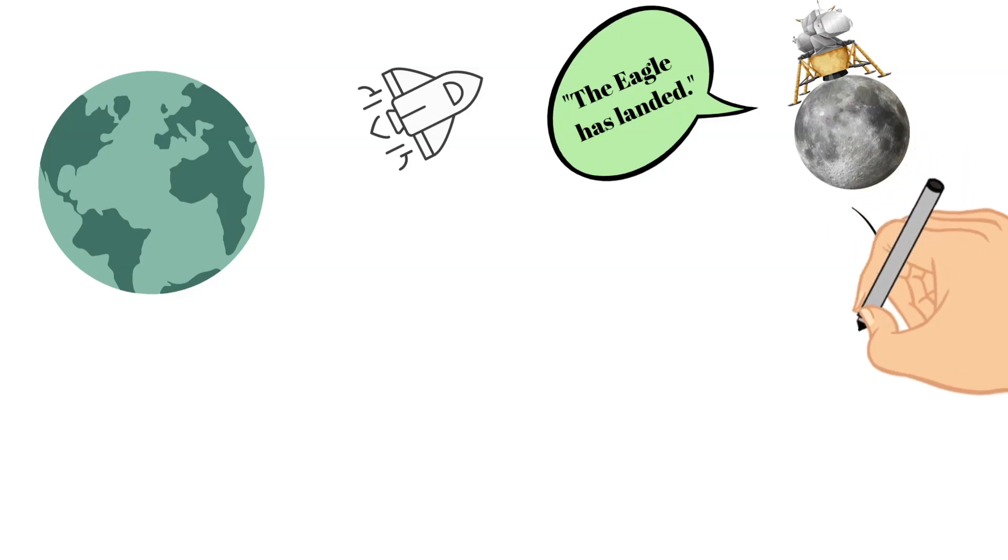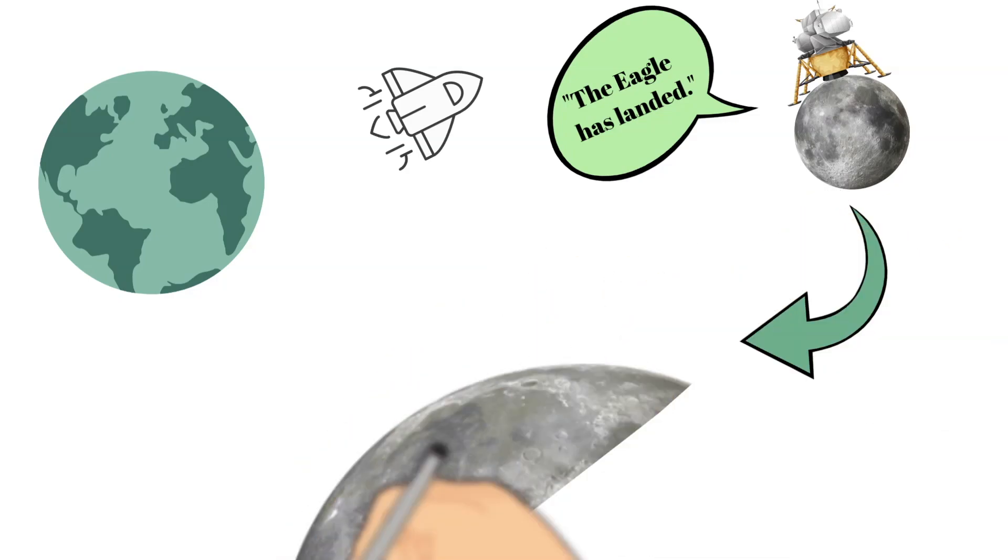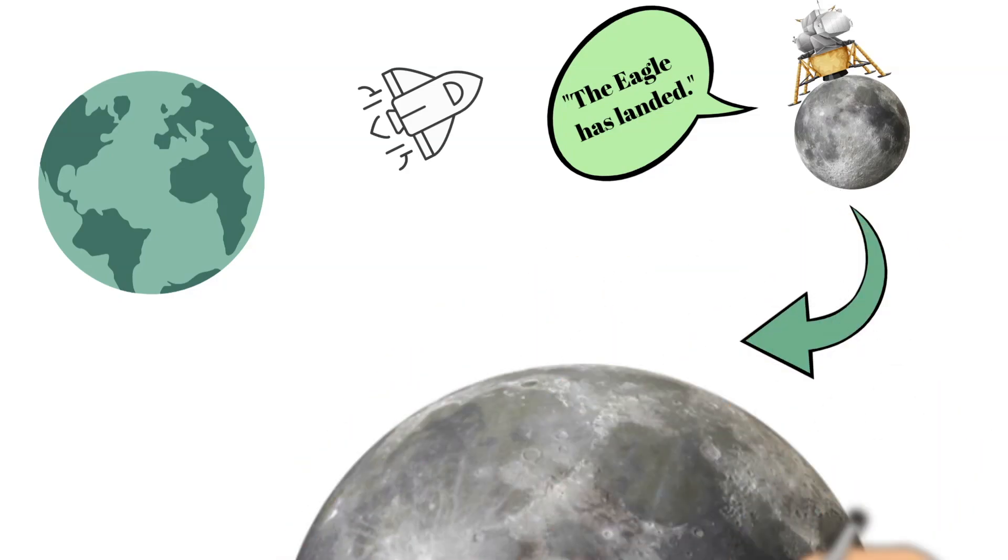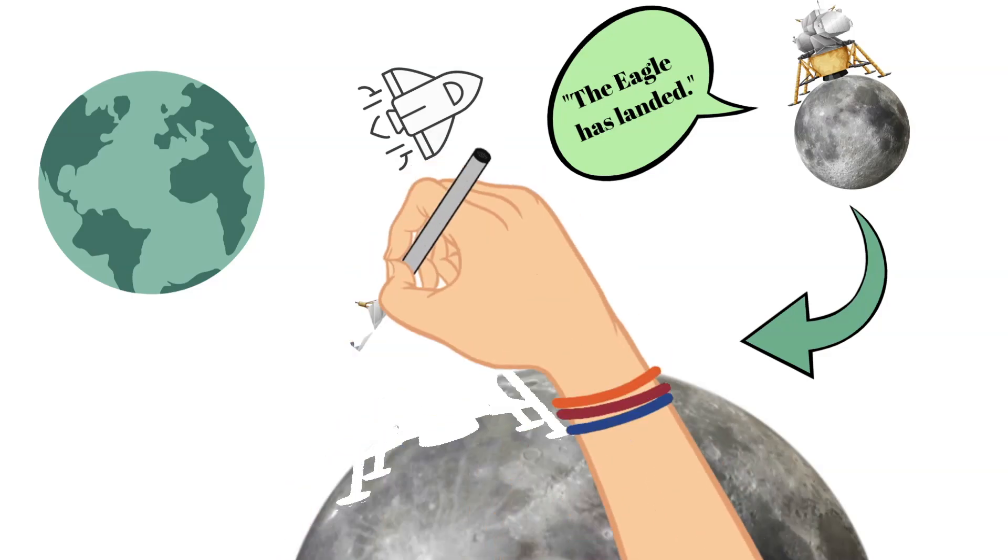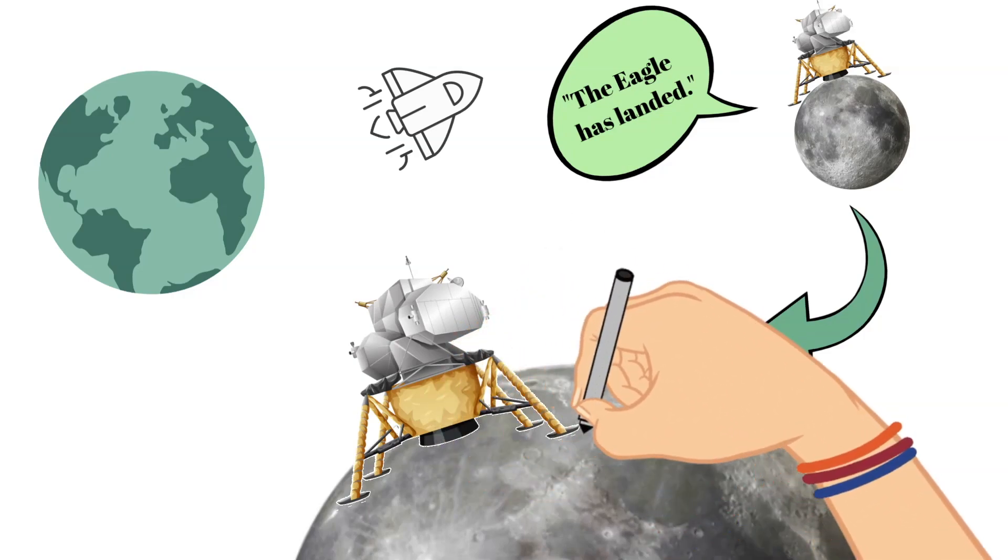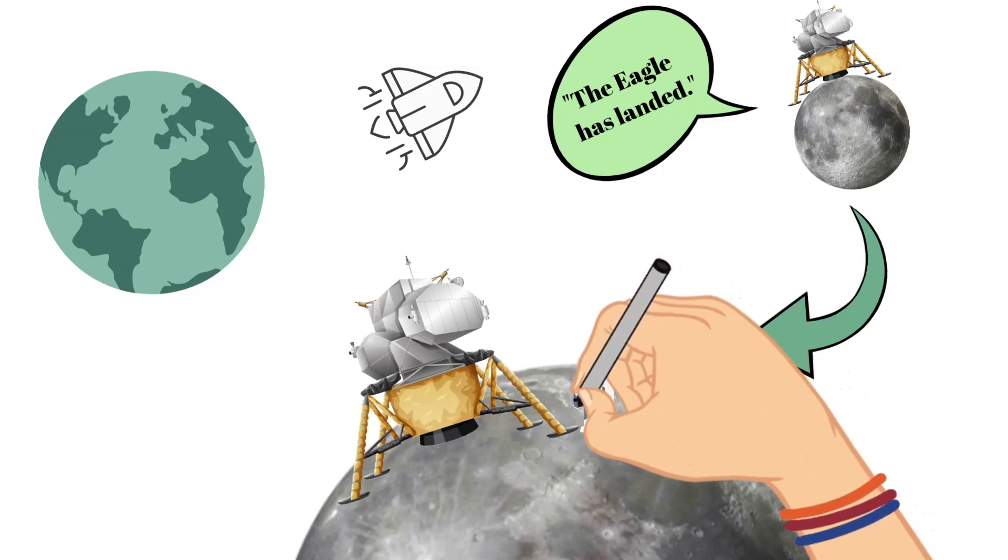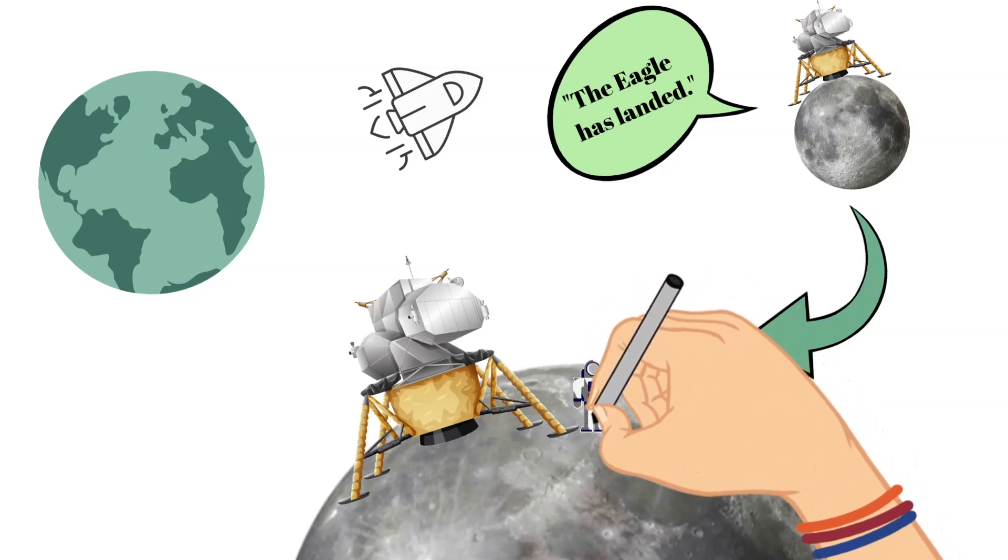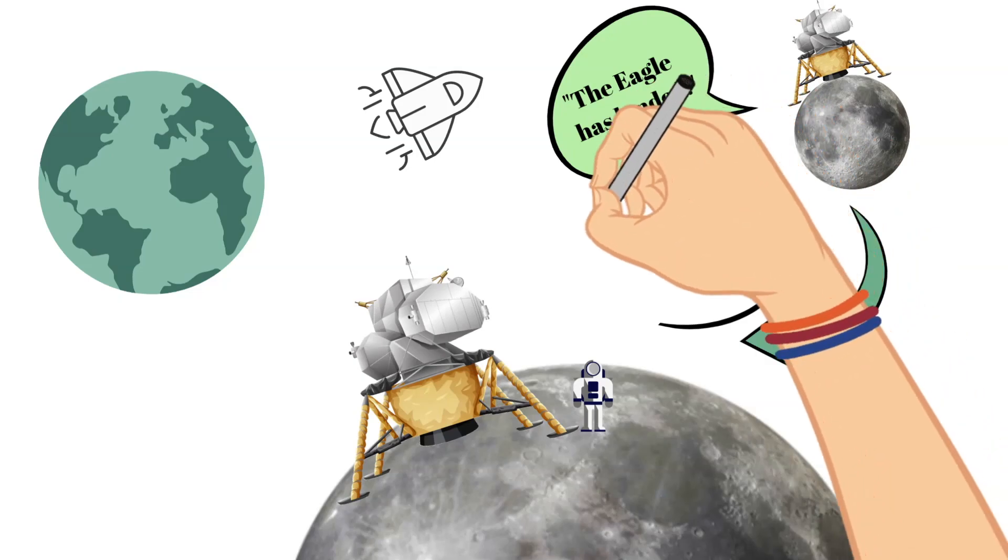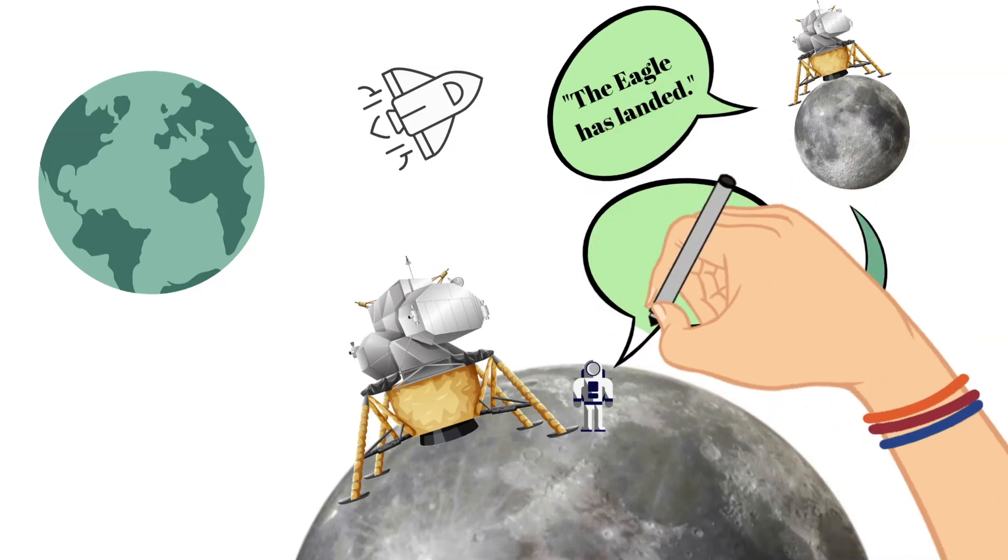At 10:39 PM, five hours after that message, Armstrong opened the hatch of the lunar module. He walked down the ladder as he was filmed by a camera, where hundreds of millions watched him take his first step onto the moon. And he spoke, which would later become his famous quote, where he said, 'that's one small step for a man, one giant leap for mankind.'